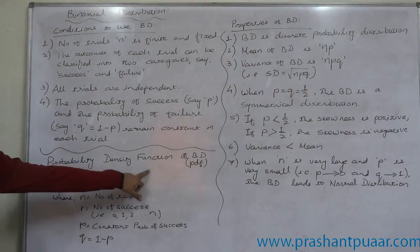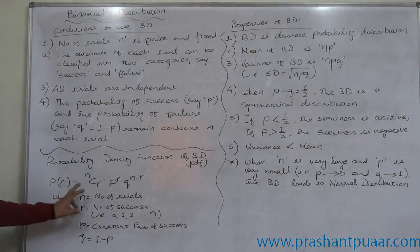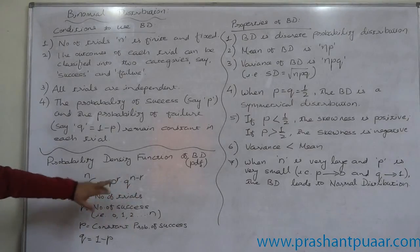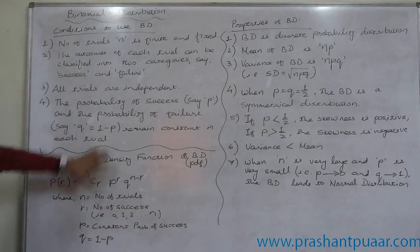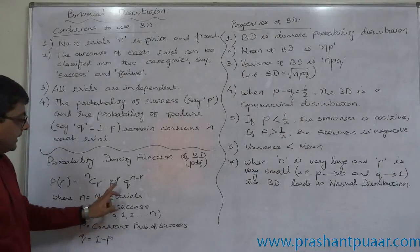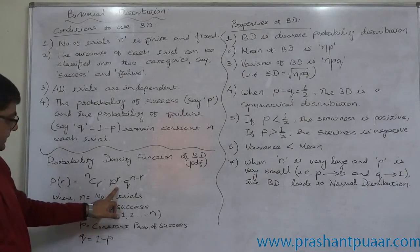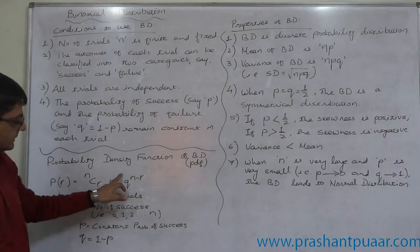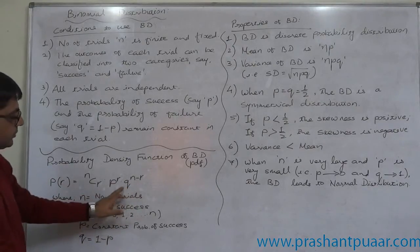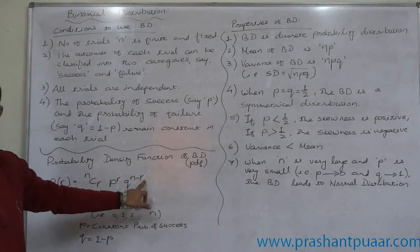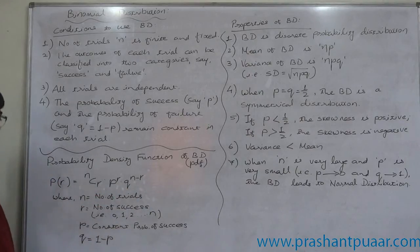This is the probability density function — the formula to calculate the probability of R number of successes, if the experiment follows binomial distribution. It is: P(R) = NCR × P^R × Q^(N−R), where NCR is the combination, P^R is the probability of success raised to the number of expected successes, and Q^(N−R) is the probability of failure raised to the expected number of failures out of the total number of trials.